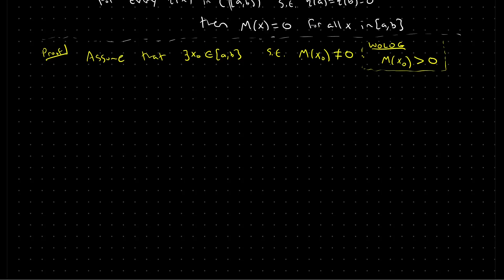With the assumption that m is non-zero at some point x₀, it helps to draw a graph of what's going on. Say this is a and this is b. This is the point x₀, and this is the value of the function m at x₀. Because m is a continuous function, there has to be an interval on which it is non-zero. There will be some point x₂ (which could be very close to x₀) and some point x₁ where the function continuously extends up to m(x₀).